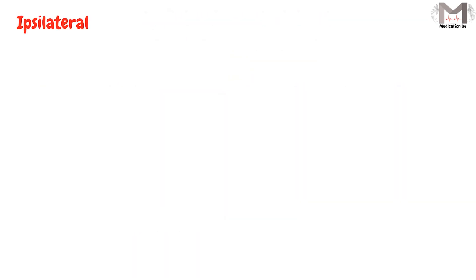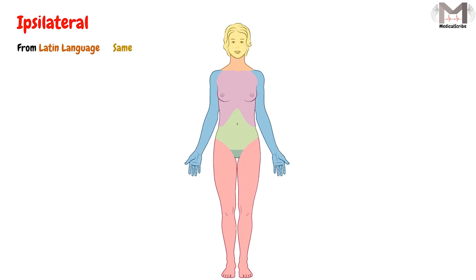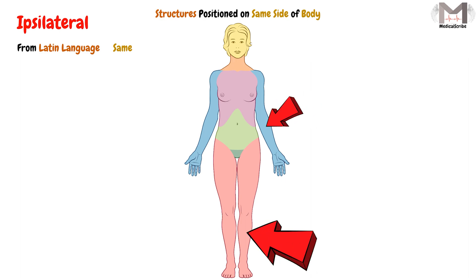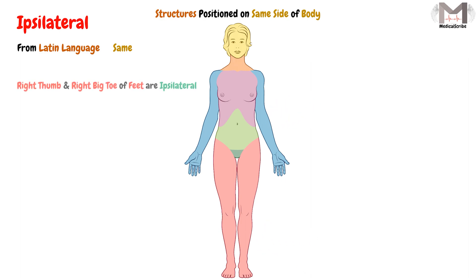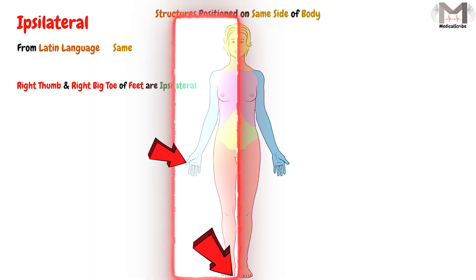The ipsilateral term is derived from the Latin language and it means 'same.' So it is used to describe structures that are positioned on the same side of the body. For example, if we say the right thumb and the right big toe are ipsilateral, this means the right thumb and the right big toe are positioned on the same side of the body, which is the right side.